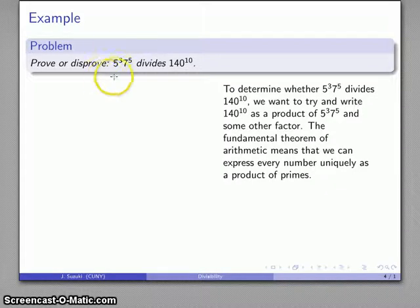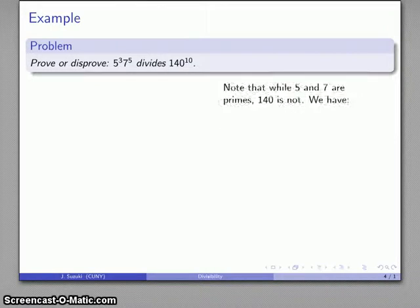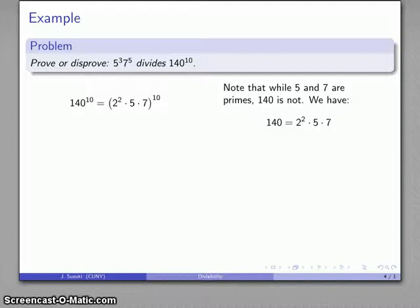Now again, 5 and 7 are both primes, so this number, 5 to the 3rd, 7 to the 5th, is already expressed as a product of primes. The only thing I have to worry about is that 140. And without going into the details, as a product of primes I could write 140 this way. So 140 to the 10th is, with a little bit of algebra, going to be this product.